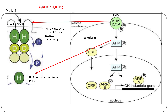Change in conformation of the cytokinin receptor leads to binding of another protein called the histidine phosphotransfer protein or AHP to this receptor, and the phosphate group is transferred to AHP. Phosphorylated AHP then moves to the nucleus and transfers the phosphate group to either type B response regulators or type A response regulators.